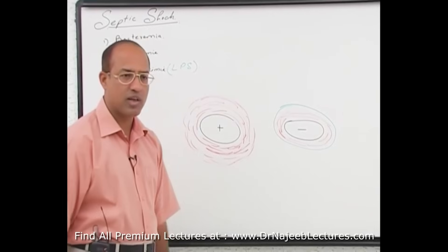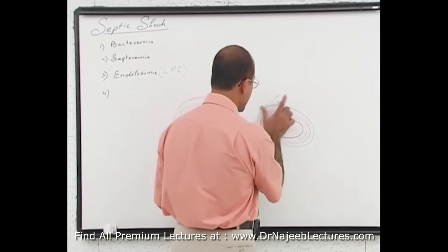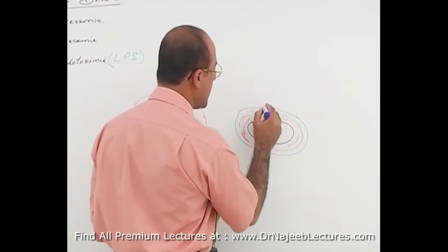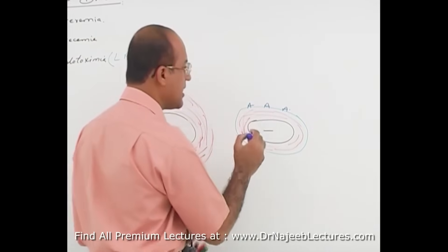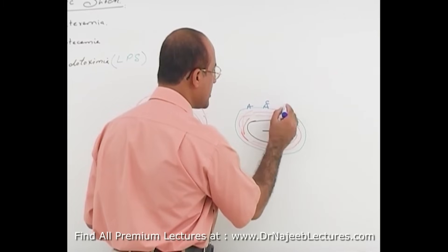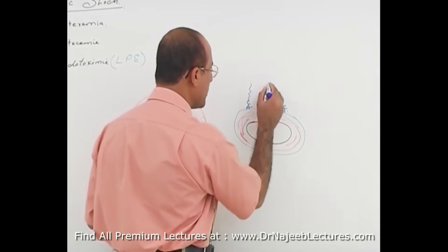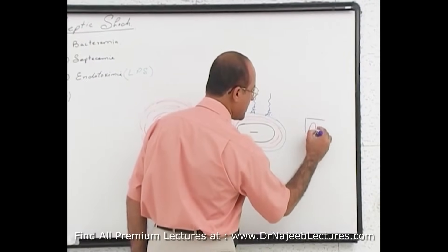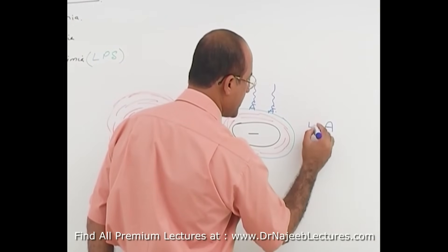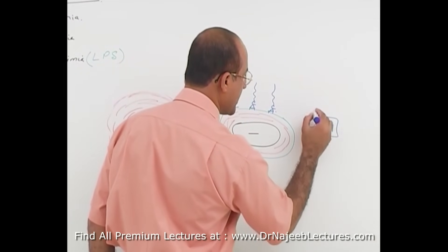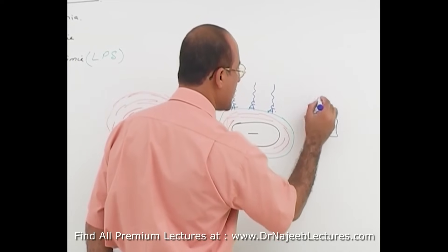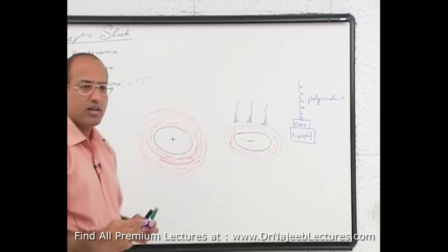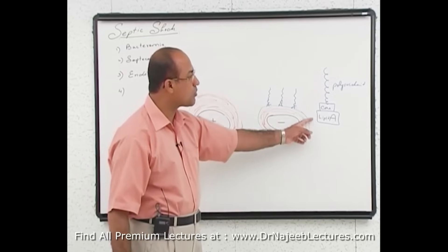In gram-negative bacteria, the outer lipid layer contains a special type of molecule called Lipid A. This Lipid A has a core carbohydrate attached to it, and with that there is a long polysaccharide tail. So the structure is: Lipid A — core sugar — long polysaccharide tail. This entire structure is called lipopolysaccharide, or endotoxin.